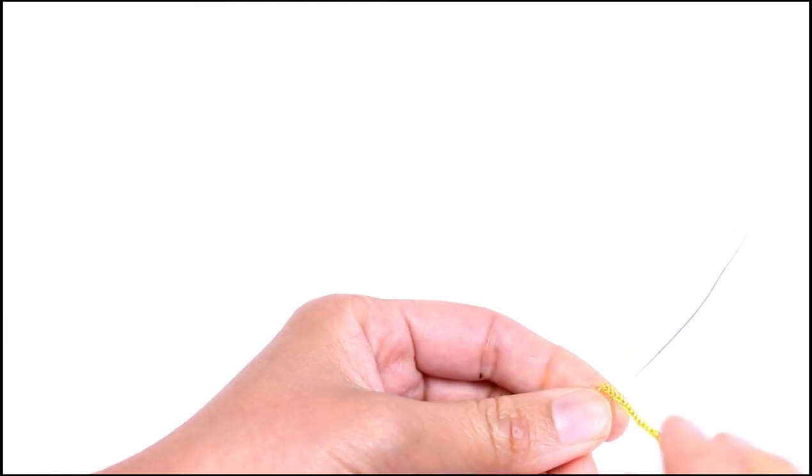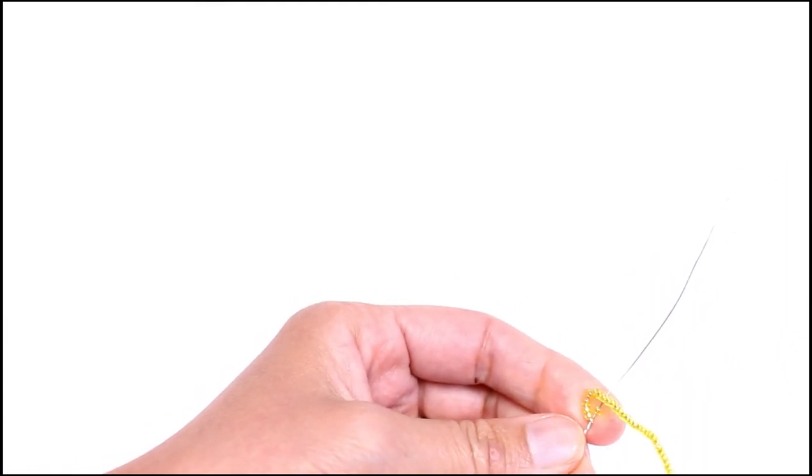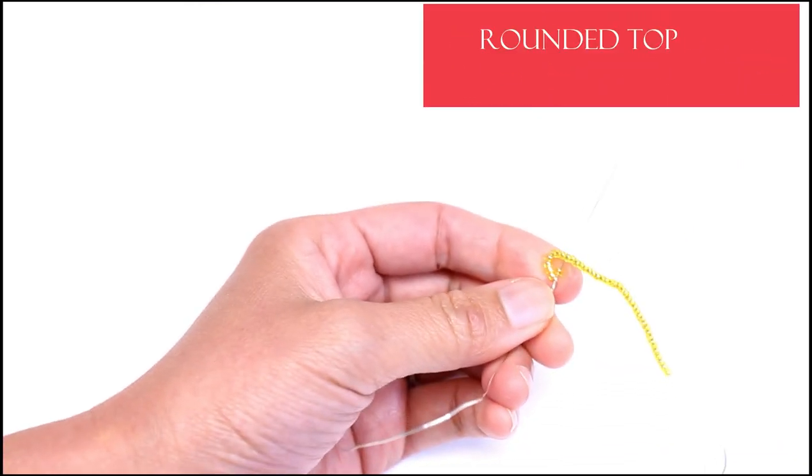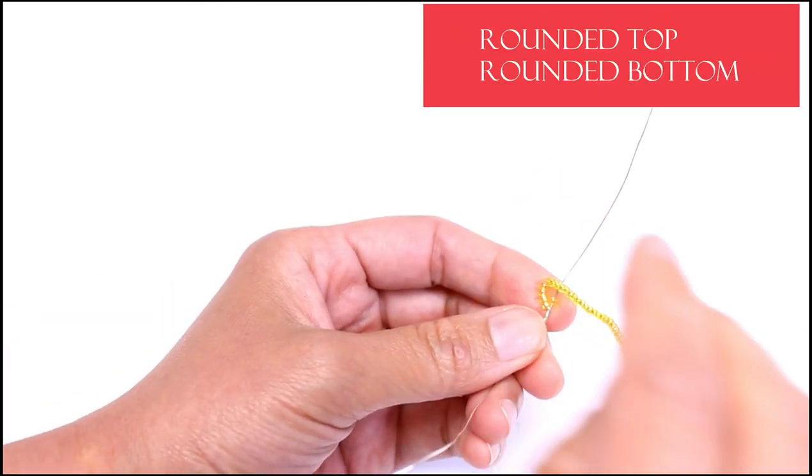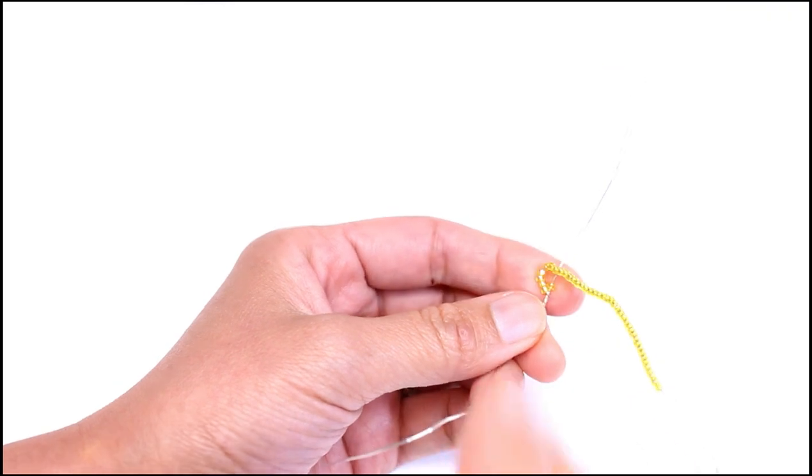So the pattern calls for one bead basic. This is going to be rounded top and rounded bottoms with 12 rows. So first we're going to make the first three rows.